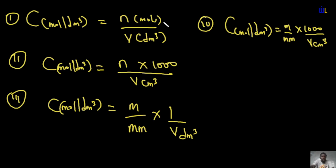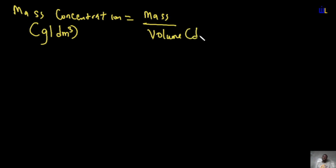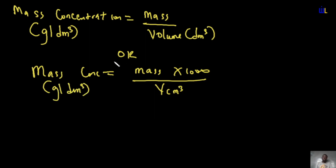The second form of concentration is mass concentration. Mass concentration is the concentration of a substance in gram per dm³. Mathematically, mass concentration = mass of solute ÷ volume of solvent in dm³. Alternatively, if volume is in cm³: mass concentration = mass of solute × 1000 ÷ volume in cm³.